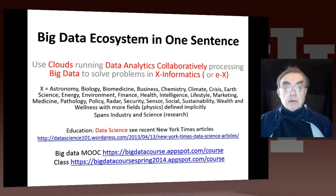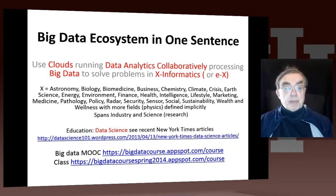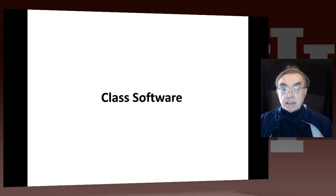We have our slogan: Using Clouds, Running Data Analytics Collaboratively on those 3,000 to 3,500 participants in each experiment, CMS and ATLAS. We're processing big data — 15 petabytes per year — to solve problems in physics informatics. And as noted, physics informatics does not exist on the web, as far as I can see.